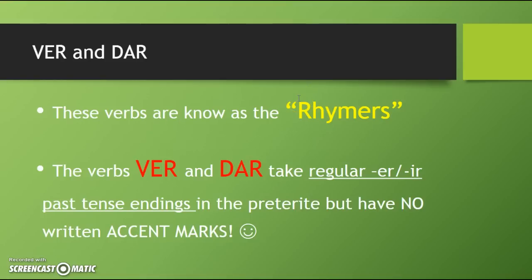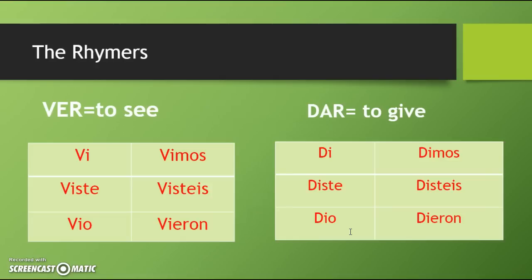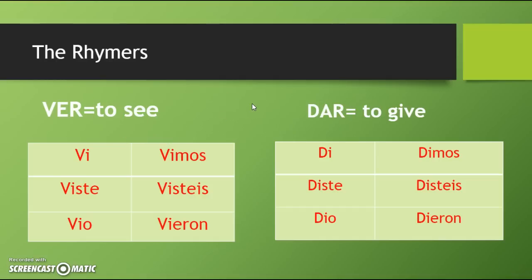Finalmente, we have our last two verbs: dar y ver. These are known as our rhymers. Ver and dar are actually going to follow the regular ER/IR past tense endings that we learned in the previous video, even though one is an ER verb and one is an AR verb — but we don't have to worry about any accent marks. ¡Qué suerte! For ver: vi, viste, vio, vimos, visteis, vieron. For dar, the same endings but starting with D: di, diste, dio, dimos, disteis, dieron. Regardless of their infinitive endings, they follow those same ER/IR preterite endings, without accents.